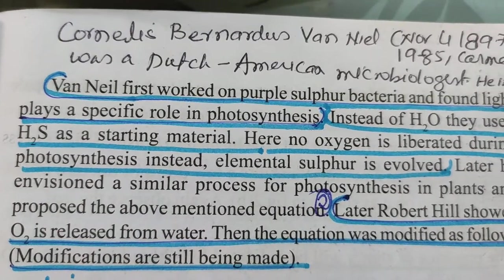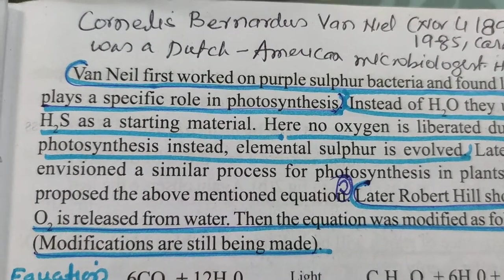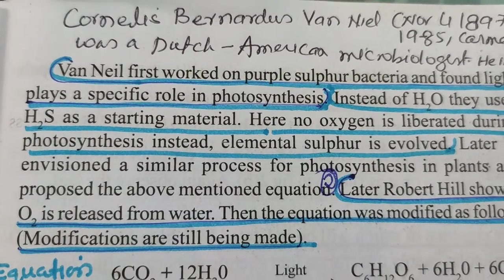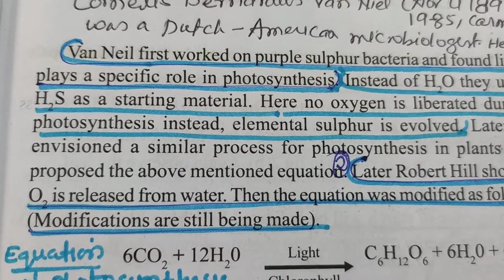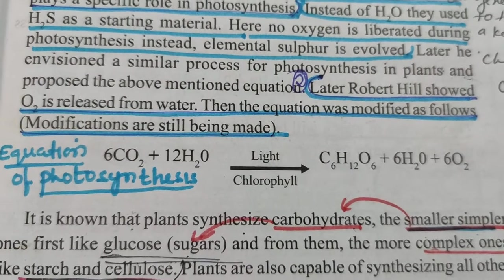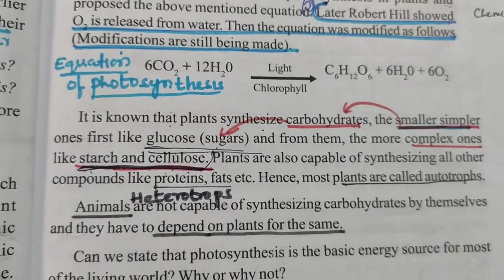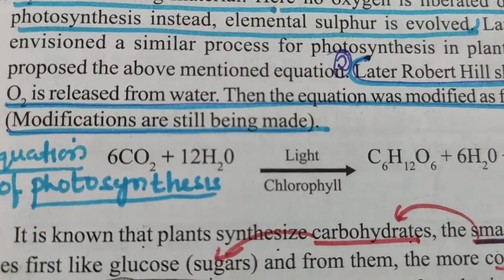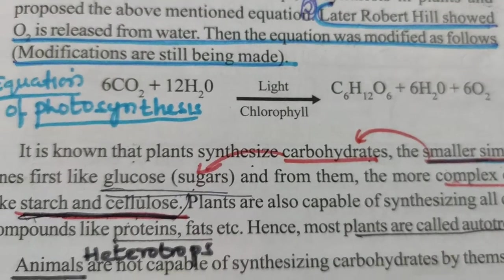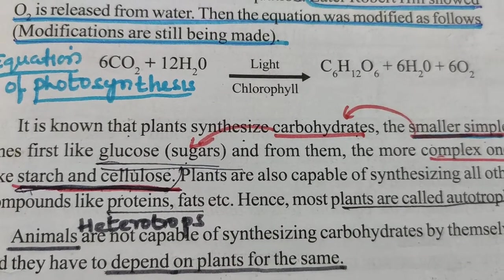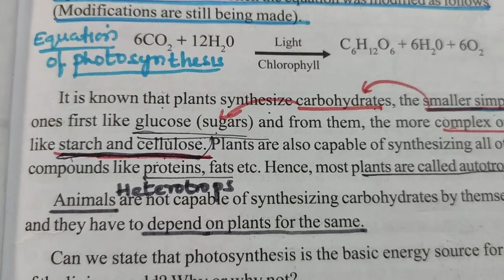Van Niel first worked on the purple sulfur bacteria and found that light plays a specific role in photosynthesis. Instead of H₂O, they used H₂S as a starting material, and no oxygen is liberated during this photosynthesis — instead elemental sulfur was produced. Later, Robert Hill showed that oxygen is released from water. The modified equation of photosynthesis is: 6CO₂ + 12H₂O in the presence of light and chlorophyll gives rise to C₆H₁₂O₆ + 6H₂O + 6O₂. The food synthesized is carbohydrate — the simpler unit is glucose, and the complex ones are starch and cellulose.